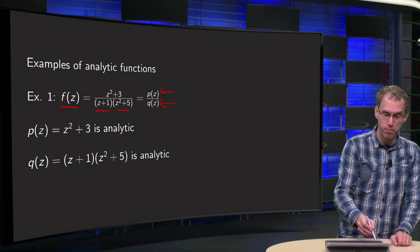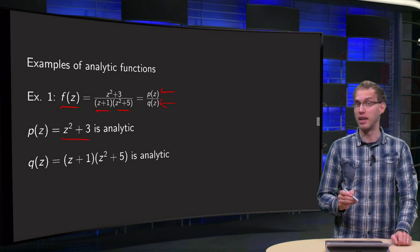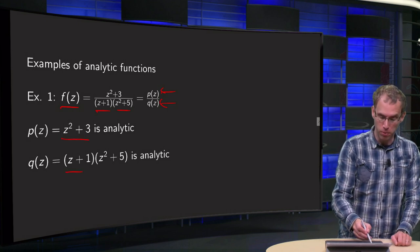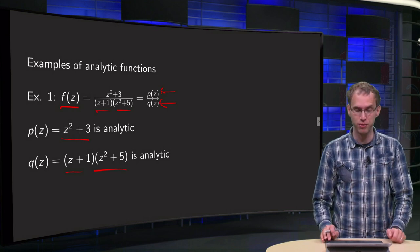Now we know p of z is a polynomial, so it is analytic. q of z is a product of polynomials, so q of z is analytic as well.